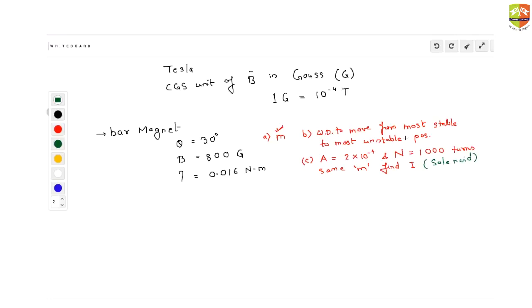M is 0.4. I hope all of you got it. How do you get this answer? Torque is m times B times sine theta. So torque is given as 0.016. This equals m into 800G, which is 800 into 10 to the power minus 4 into sine 30, which is half. Once you solve it, you'll get the value of m to be equal to 0.4.